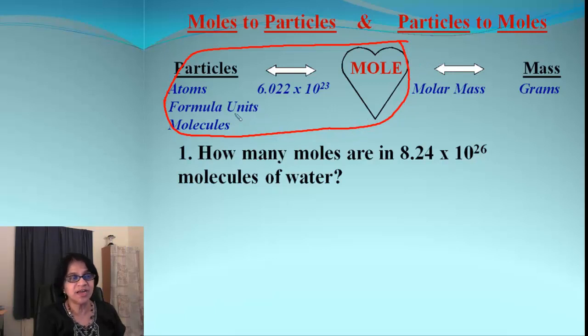Let me explain, when we use the word particles, there are three different terms. Atoms, formula units and molecules all correspond to particles. Atom is something we use for elements, formula units and molecules go for covalent and ionic compounds. But either way, they all are simply particles.